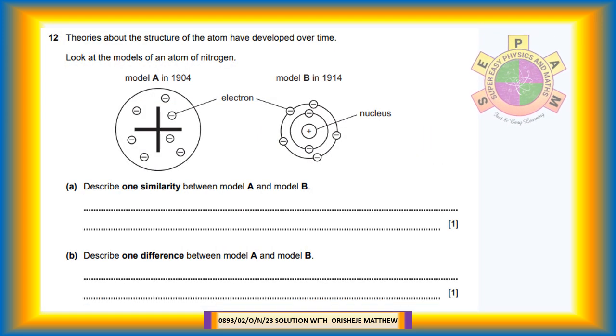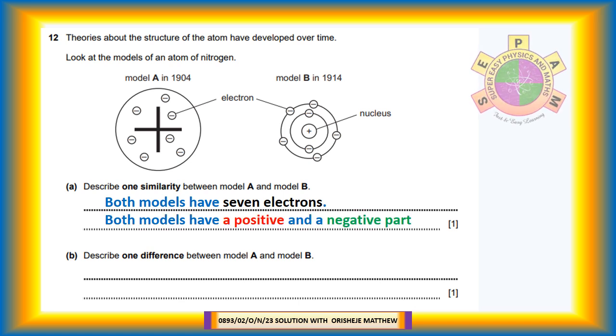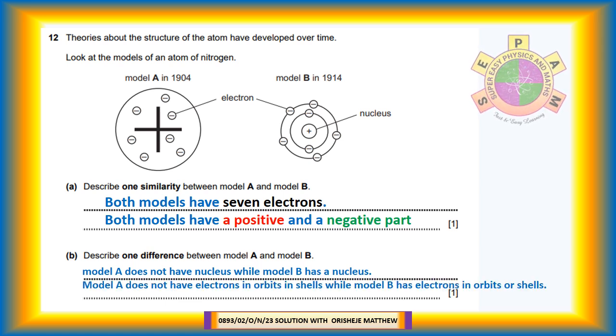Question 12. Theories about the structure of the atom have developed over time. Look at the models of an atom of nitrogen. Model A in 1904, Model B in 1914. Question 12a: Describe one similarity between Model A and Model B. Both models have 7 electrons. Both models have a positive and a negative part. Question 12b: Describe one difference between Model A and Model B. Model A does not have nucleus while Model B has a nucleus. Model A does not have electrons in orbits and shells while Model B has electrons in orbits or shells.